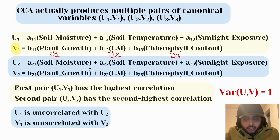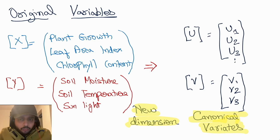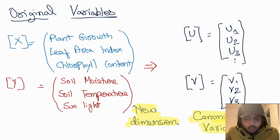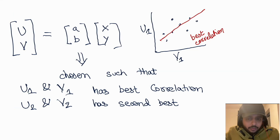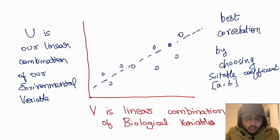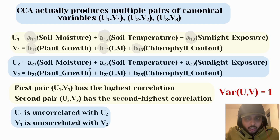From x and y we have transformed into new dimensions u and v, which are linear combinations of our earlier variables. The coefficients a and b are not random selections — they are carefully chosen to maximize the correlation between u and v. This means the coefficients are selected such that u and v have the strongest possible relationship between our environmental and biological variables.